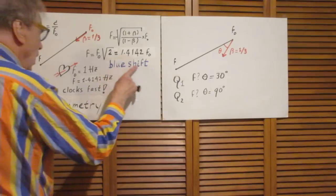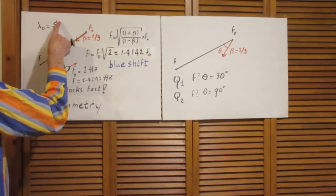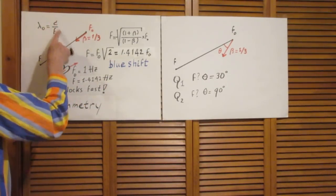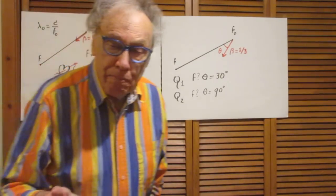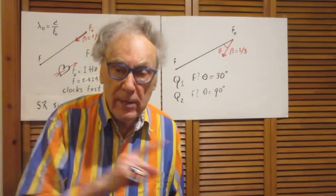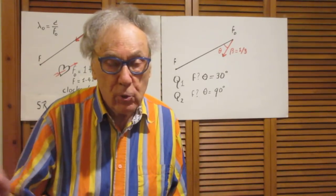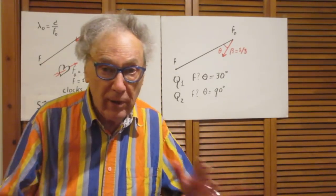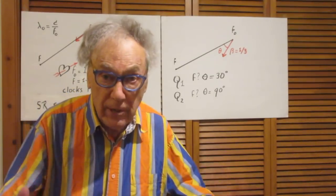He will receive a frequency which is 1.4142 times higher than F0. We call that blue shift. Frequency goes up and the wavelength goes down, because wavelength is speed of light divided by frequency. In special relativity, the question whether Susan is moving towards Walter or Walter towards Susan is meaningless. The only thing that matters is the relative motion between the two.